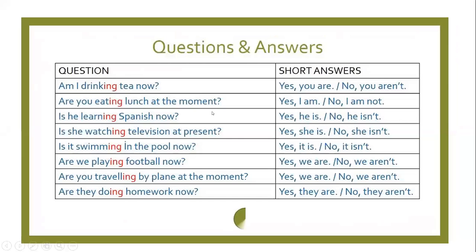Now we look at yes/no questions, which use the verb to be and give only a yes or no answer. For example: Am I drinking tea now? Yes, you are, or no, you aren't. Are you eating lunch at the moment? Yes, I am, or no, I am not. Is he learning Spanish now? Yes, he is, or no, he isn't. Is she watching television at present? Yes, she is, or no, she isn't. Is it swimming in the pool now? Yes, it is, or no, it isn't. Are we playing football now? Yes, we are, or no, we aren't. Are they doing homework now? Yes, they are, or no, they aren't.